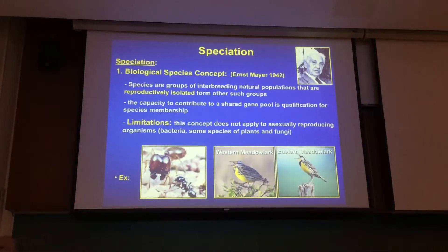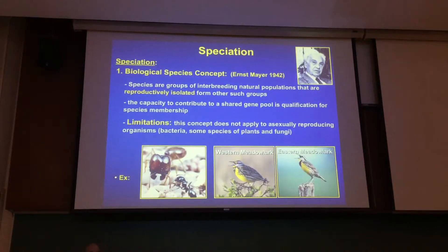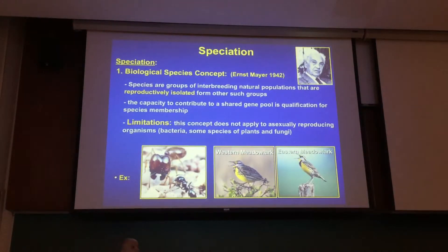Here are different ways to think about speciation. This is an old concept still utilized today — the Biological Species Concept, first developed by Ernst Mayr in 1942. The distinction of a species: species are groups of interbreeding natural populations that are reproductively isolated from other such groups. The capacity to contribute to a shared pool of genes is qualification for membership in that species — basically, if I can share genes with you, we're the same species.